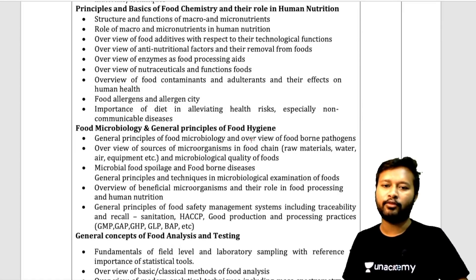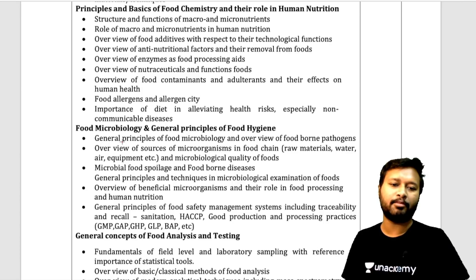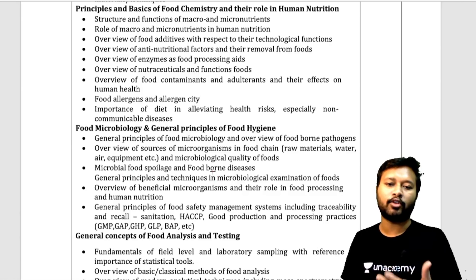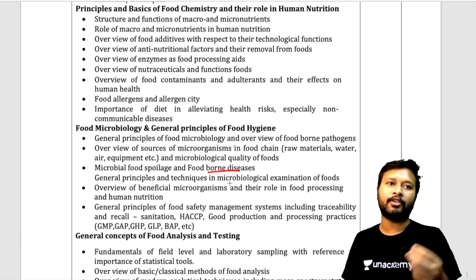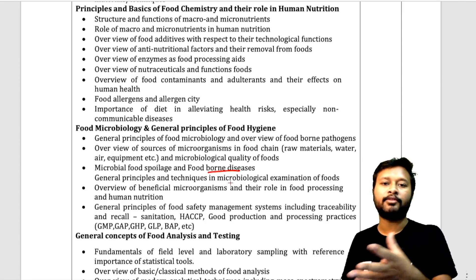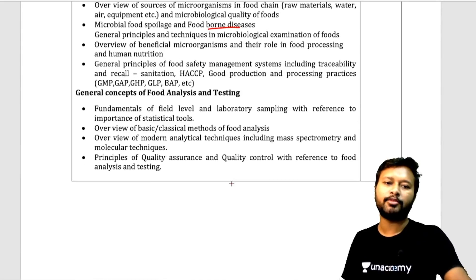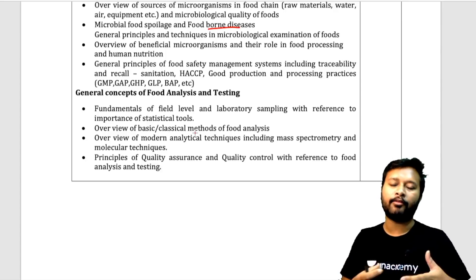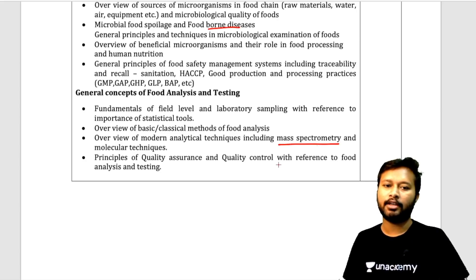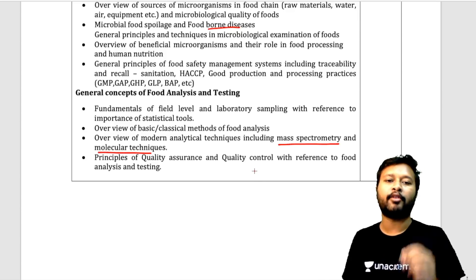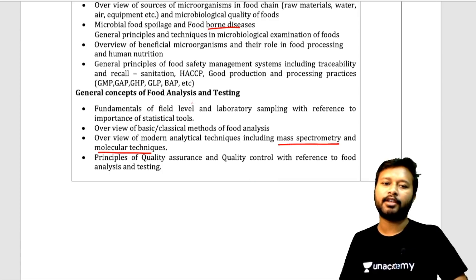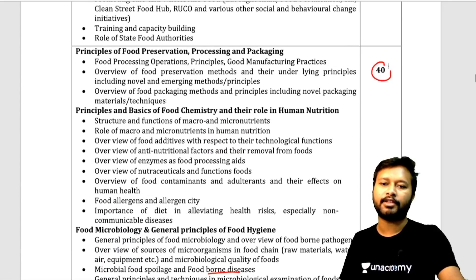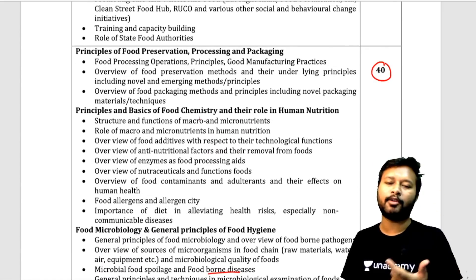Food microbiology and general principles of food hygiene will be easier for those who have done masters in microbiology. Topics include microbial food spoilage, foodborne diseases, and vitamin deficiency-related questions. General concepts of food analysis and testing cover analytical techniques, laboratory sampling, mass spectrometry, molecular techniques, and quality assurance — how you ensure a food item is of good quality. Total 40 questions are based on this section, drawing mostly from chemistry, microbiology, and basic sciences.